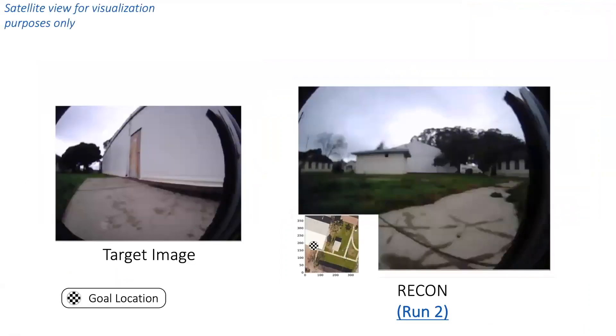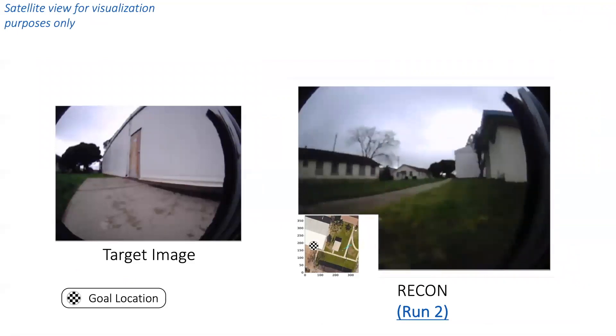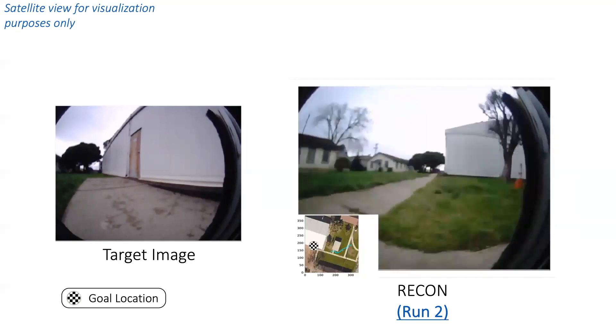Deploying in a suburban neighborhood, RECON is able to find a path to the goal in about 15 minutes and successfully navigate to it in under 20 seconds.